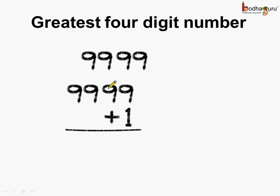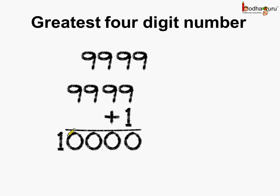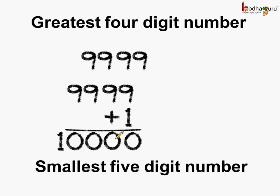0 here, 1 goes above. So again 9 plus 1 is 10, 1 goes here. Again 10, 1 goes here. 10 again. So we get the smallest 5-digit number, which is 10,000. So 10,000 is the smallest 5-digit number.